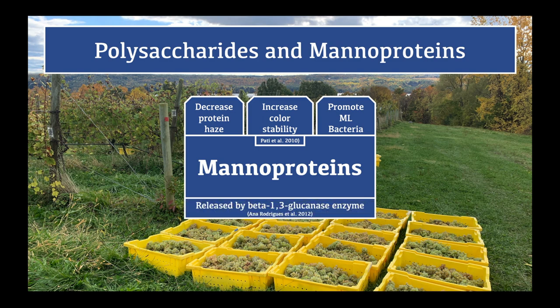Manoproteins become present in the wine when the beta-1,3-glucanase enzyme hydrolyzes the cell wall glucans, and alpha-manosidases and proteases subsequently release manoproteins. They are then suspected to bind to wine components that would typically aggregate and cause haziness. These cell wall manoproteins will also inhibit potassium hydrogen tartrate crystallization far better than the yeast manoproteins already present in the wine.